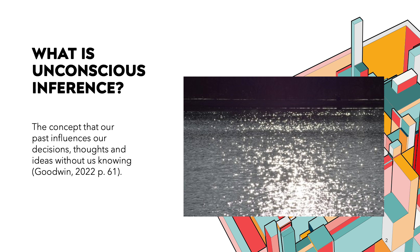For example, whenever you see the sun glistening off the water, your brain lets you know that it's the sun reflecting off the water. As you can see in the picture, you know that's caused by the sun, but without unconscious inference you would believe the water is sparkling — yet your past experiences tell you that water does not sparkle.